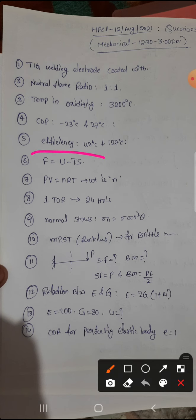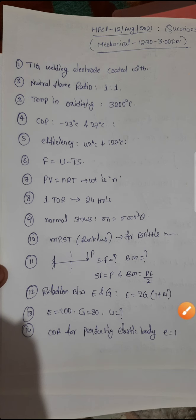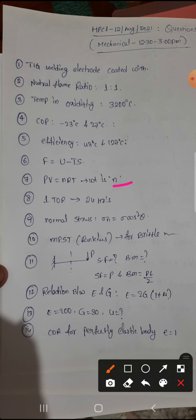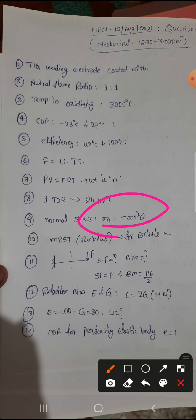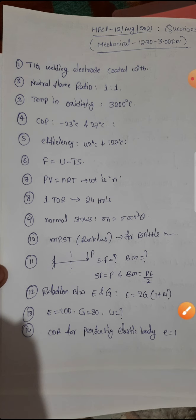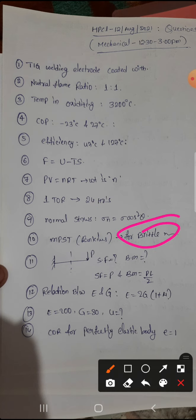And here Hamilton equation they are asking, and what is N. Number of moles. One turn will finish in how many hours, that is 24 hours. Normal stress there is one question, sigma into cos square theta. Rankine for brittle material, that one also asked.